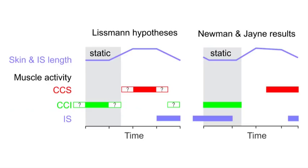Most of Lissmann's hypotheses for the costocutaneous activity were supported. However, the observed and predicted activity of the interscutalis differed, mainly because of its isometric activity during static contact.